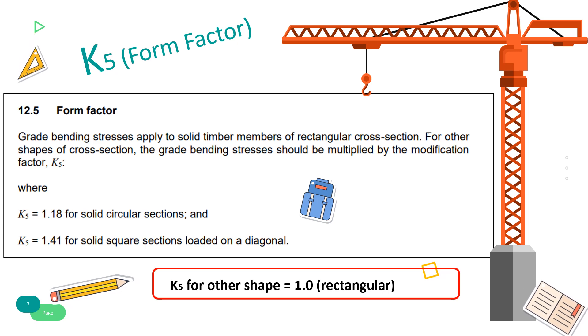Refer to Clause 12.5 for modification factor K5 for form factor. In this question, K5 only has values for solid circular and solid square sections. Therefore, for a rectangular section, the modification factor is 1.